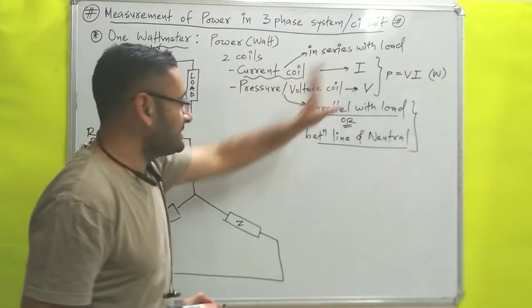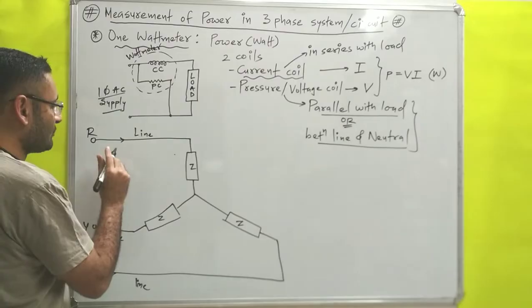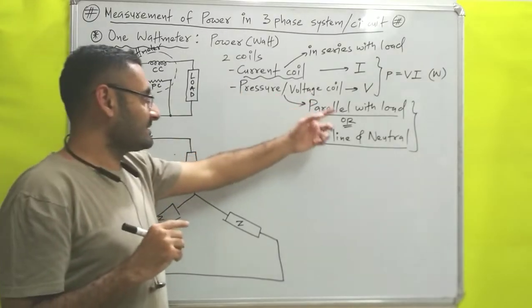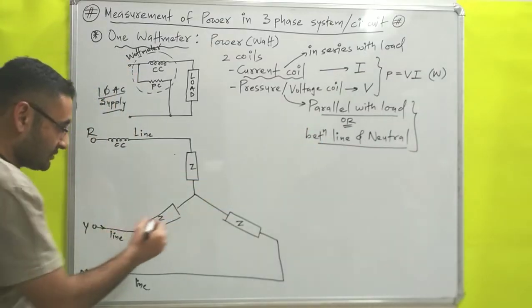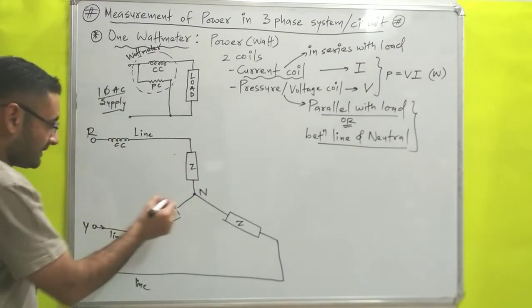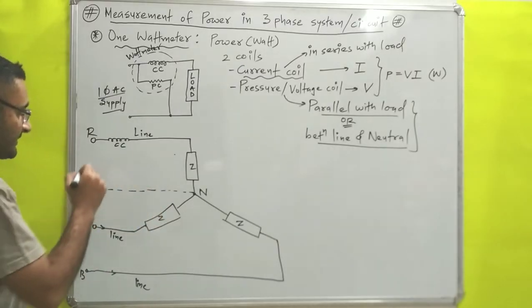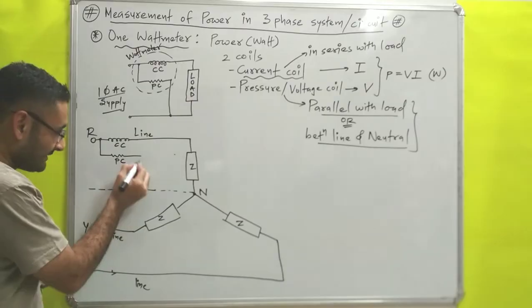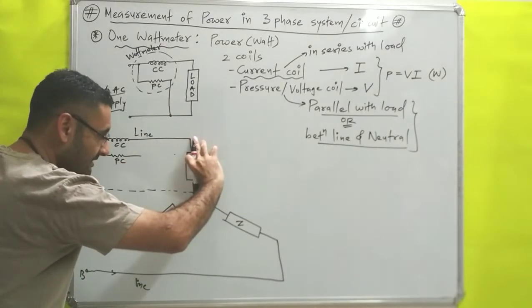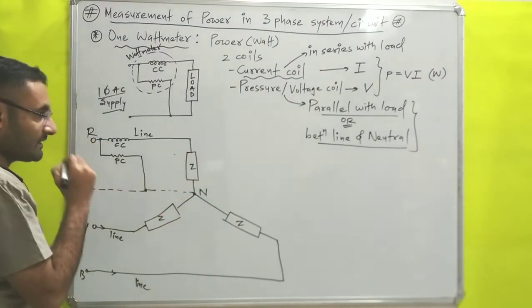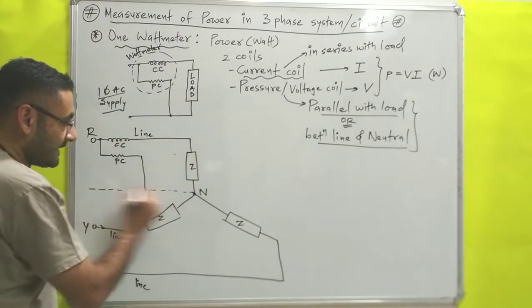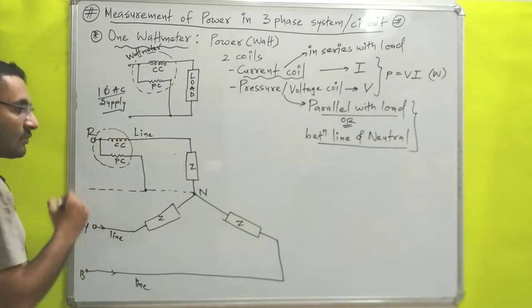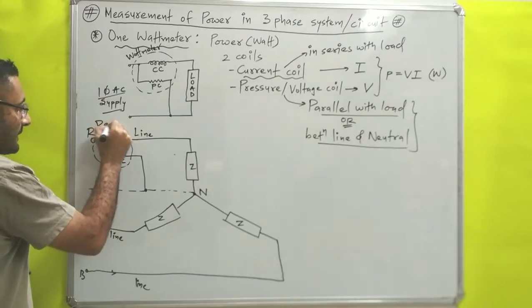Now we connect the wattmeter. The current coil CC is connected in series with one of the loads — you can select any load. Then the pressure coil PC is connected between line and neutral. The neutral point is drawn, and the pressure coil is connected from the line side to the neutral. This confirms that connecting the pressure coil between line and neutral is the same as connecting it in parallel with the load. The current coil and pressure coil together form the wattmeter, which provides a reading of power W.